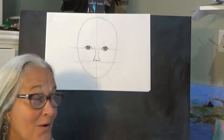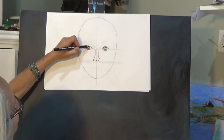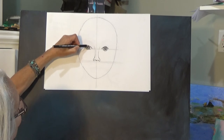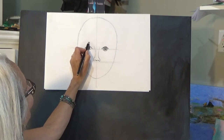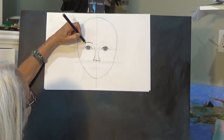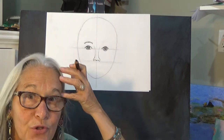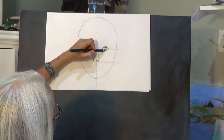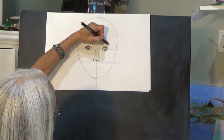The eyebrows are about the same distance above the eye as the eye is wide. So see how wide the eye is? I'm going to jump up that distance and draw an eyebrow. If you want this to look like yourself, look in the mirror and see what shape your eyebrow is, because they're all shaped a little bit differently. Then I go up on the other side and draw another little eyebrow, just sketching it in.